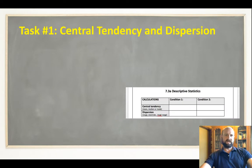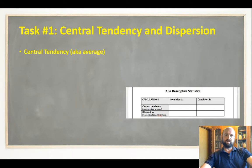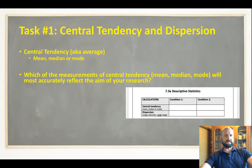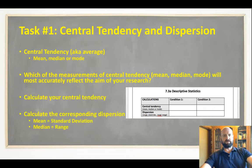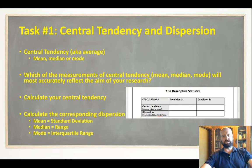After that, they get into calculating their central tendency and dispersion. Unlike the old guide, in the new curriculum students don't need to explain their choices, but they do need to make sure that they're appropriate. So they have the mean, median, or mode, and then the corresponding dispersion: if mean, standard deviation; if median, the range; and if mode, the interquartile range.